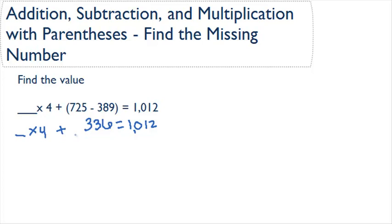Our next operation that we can see here is plus 336. To get rid of this, we can subtract 336. That'll cancel out these, and on this side we'll get 1012 minus 336, which gives us 676.